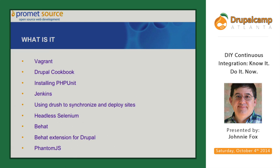The way we have put this together is a set of tools that we use. For all the people here using some automated build, we're probably using some of the same tools but probably not using them in the same way. We use Vagrant. Each project as we build it — Vagrant is a tool for managing virtual machines. It allows you to build a box for a project.